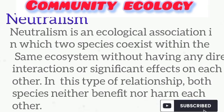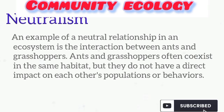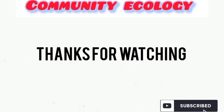Neutralism is a kind of interaction between two species that coexist in the same ecosystem without any direct effect on each other — meaning there is no direct benefit or harm between them. An example is grasshoppers and ants, which usually cohabit in the same habitat but have no direct effect on each other's population. Neutralism occurs because the two cohabiting species utilize different resources in their environment. This is the end of the lecture — please subscribe to support this channel. Thank you.